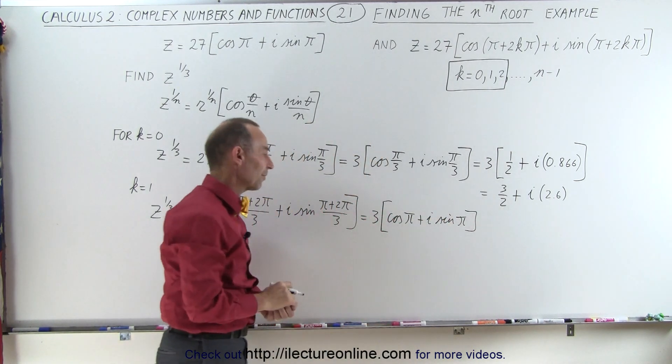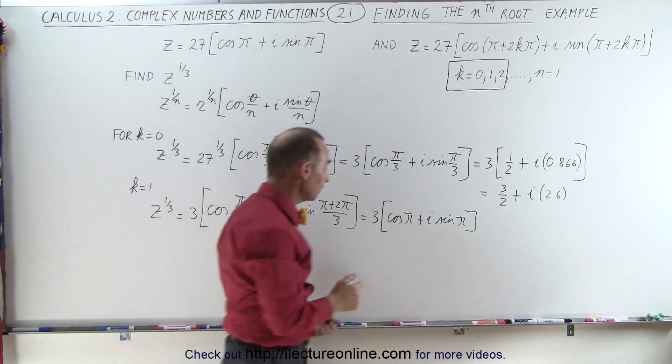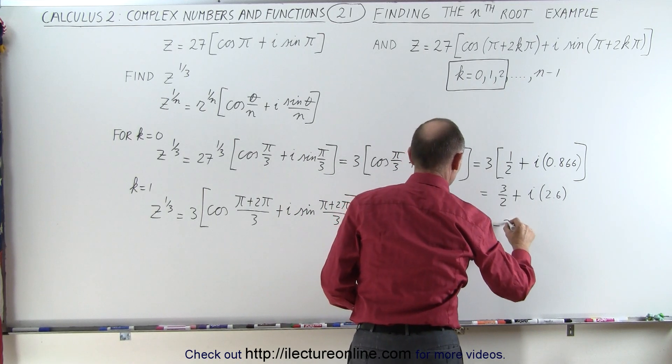And of course you can simplify that even further. The sine of π is 0, the cosine of π is negative 1, and so this can be written as negative 3.